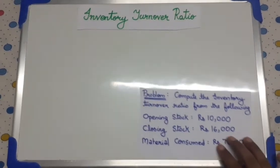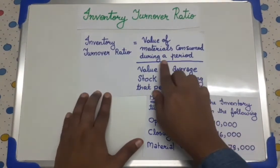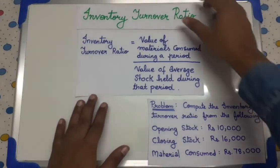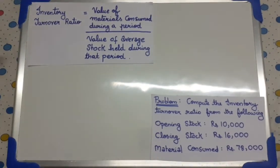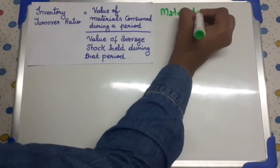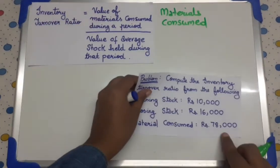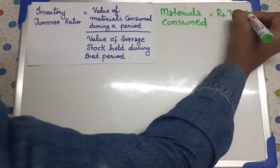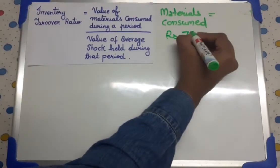What is the formula for inventory turnover ratio? The formula for inventory turnover ratio is value of materials consumed during a period divided by the value of average stock held during that period. In this question, they have given us the value of materials consumed, which is Rs 78,000.